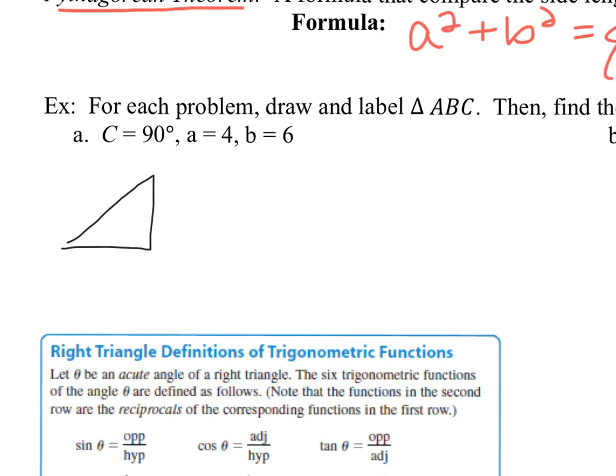If we draw our triangle to match the one above, we've got angle A at the bottom, angle B at the top, and side c is that 90-degree angle. Lowercase a is 4 and lowercase b is 6. The missing side length is side c, the hypotenuse. If we apply the Pythagorean theorem, a squared plus b squared equals c squared, and the a and b go on the left-hand side, squared and added together — 4 squared plus...